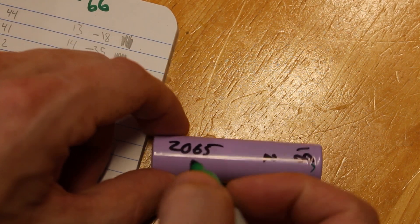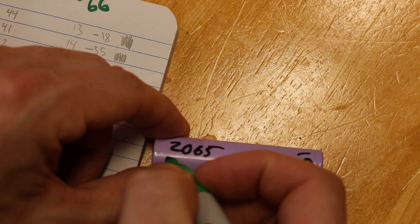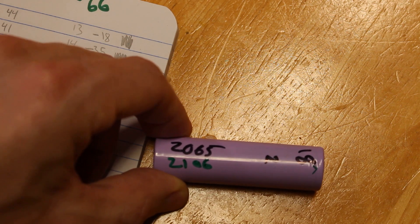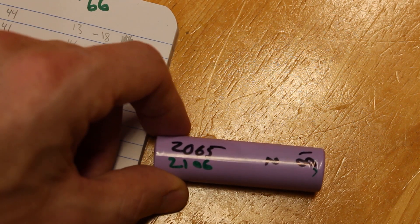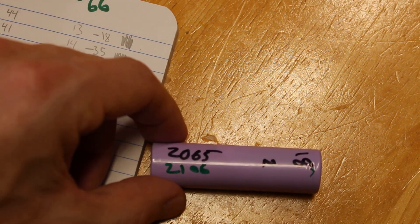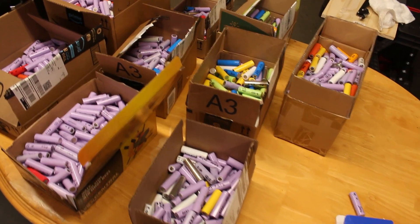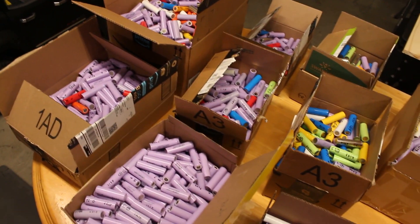So 2065 plus 41 is going to be 2106, I believe, if my math is right. And that's terrible handwriting, but 2106 is what the new unbiased capacity is. Then just need to repeat that a couple thousand times.